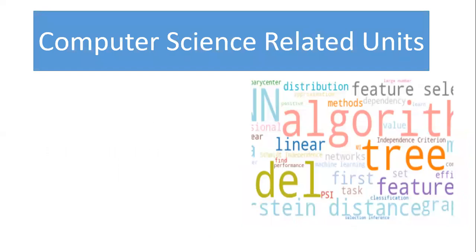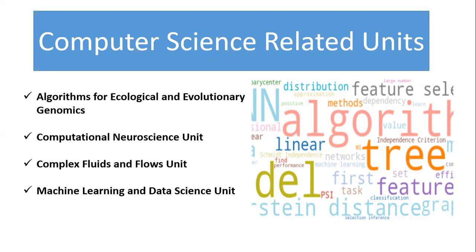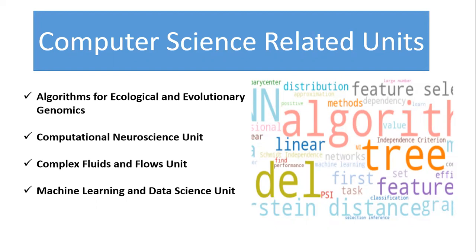If your background is computer science, you can apply to units such as Ecological and Evolutionary Genomics, Computational Neuroscience, Complex Fluids and Flow, and Machine Learning and Data Science. Importantly, this shows the cross-disciplinary nature of OIST — for example, if you have a biology background with knowledge of bioinformatics or DNA sequencing algorithms, you can also apply to the machine learning unit. A biology student can apply to a computer science unit. This is the beauty of OIST: it provides cross-disciplinary areas where you can apply.